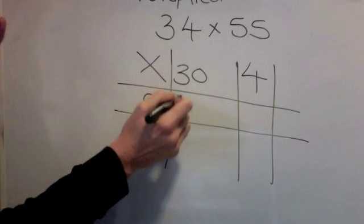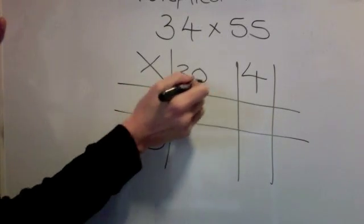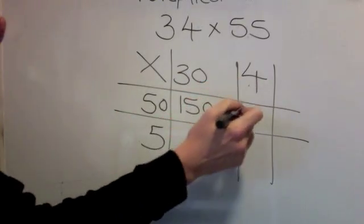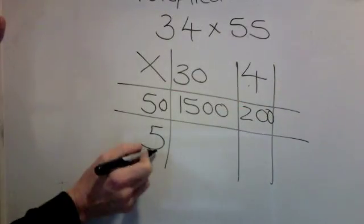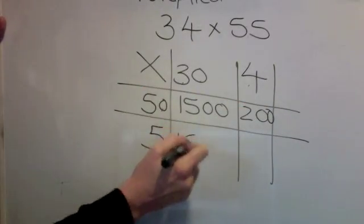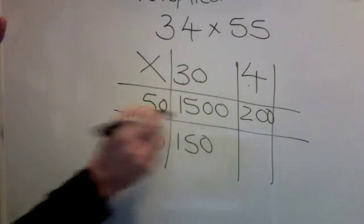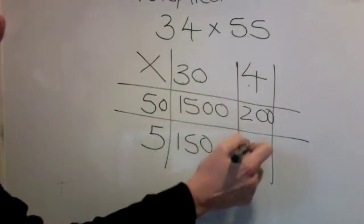5 times 3 is 15, one, two zeros. 5 and 4 is 20, one, zero. 5 times 3 is 15, one, zero. 5 times 4 is 20, no zeros.